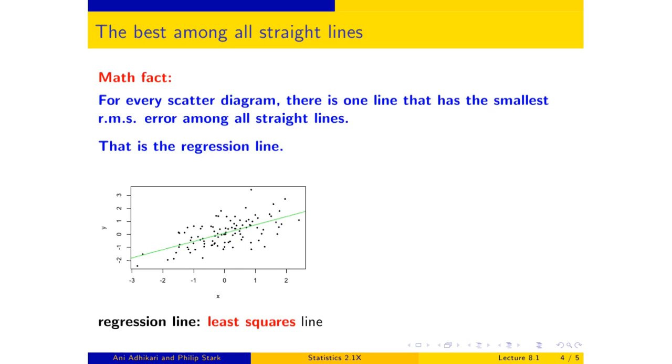This happens to be true regardless of the shape of the scatter diagram. For the football-shaped scatter diagram, that's particularly useful because you can use your line for estimations throughout the range of x.